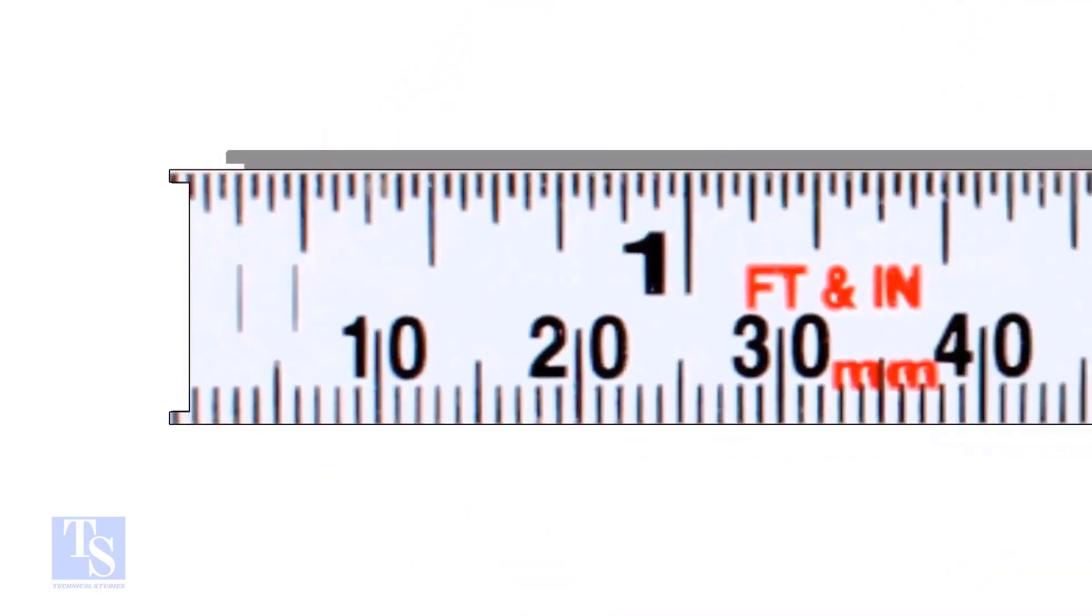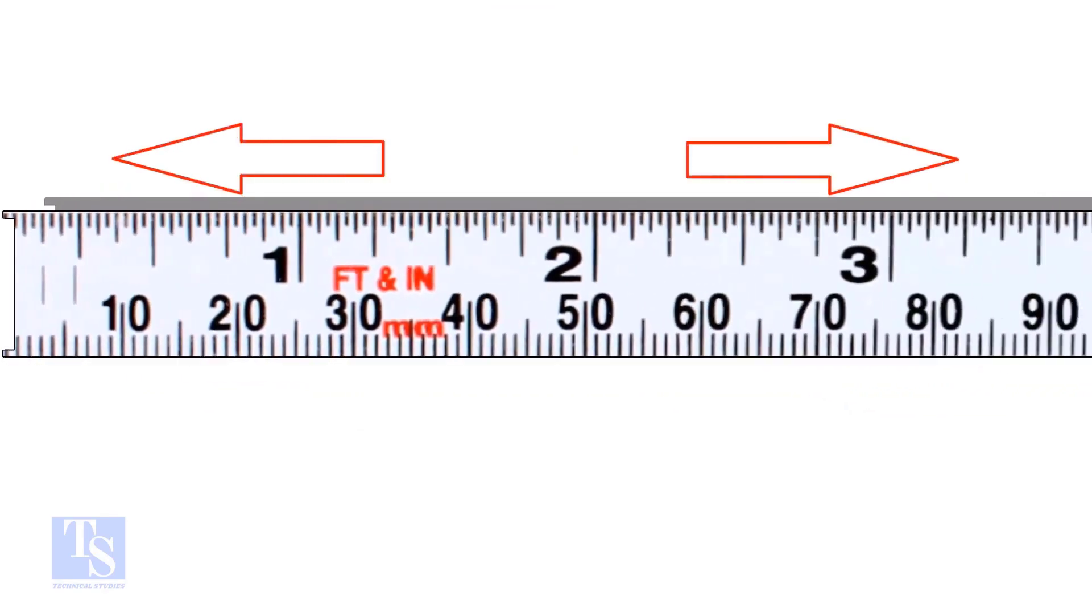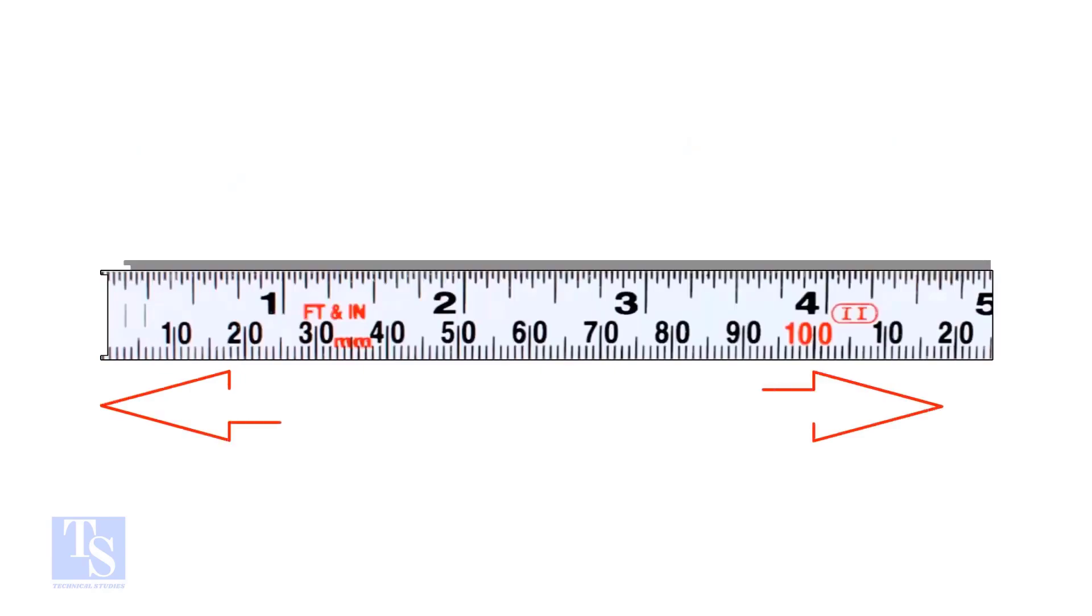Let us go to the subject now. Usually, on a measuring tape, there are two types of units. The imperial unit system, inch and the foot, and the metric unit system, millimeter, centimeter, and the meter.